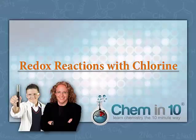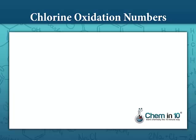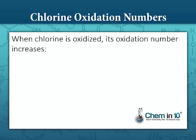This is Melanie Fine with Chem in 10. Today we're going to look at redox reactions involving chlorine. Chlorine has various oxidation numbers, and we're going to look at specifically when chlorine is oxidized and when it's reduced.